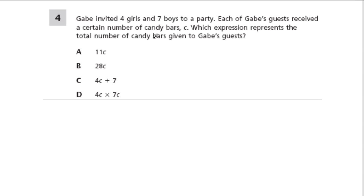So here, Gabe invited four girls and seven boys to a party. Each of Gabe's guests received a certain number of candy bars, C, which expression represents the total number of candy bars given to Gabe's guests. Okay, so at this party, there are four girls, and there are seven boys, right? And C is for candy bars. And each of Gabe's guests received a certain number of candy bars, C. So how many guests are there? Well, there's four girls and seven boys, and they're all guests, so that's 11 guests.